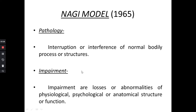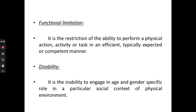The second component is impairment. Impairments are losses or abnormalities of physiological, psychological, or anatomical structure or function of the body. So any losses of physiological, psychological, or anatomical structure or function are called impairment.